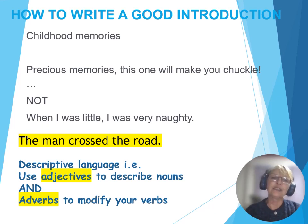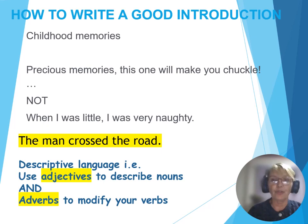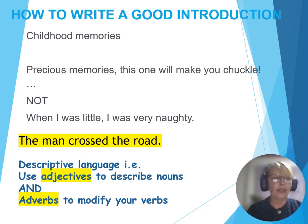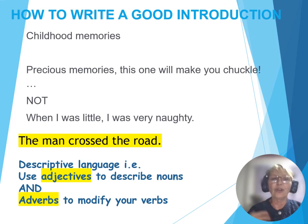I like to use this example for you. For descriptive language, we use adjectives to describe nouns and adverbs to modify your verbs. A simple sentence like 'The man crossed the road' is very boring. Think of something more exciting. What type of man was it? What type of road was it? 'The old, rugged man crossed the busy road.' And you can get even more descriptive with it.